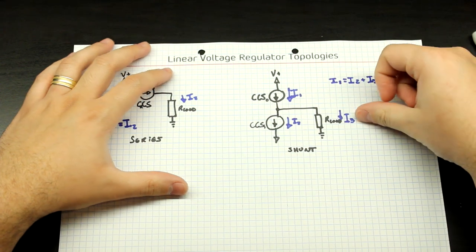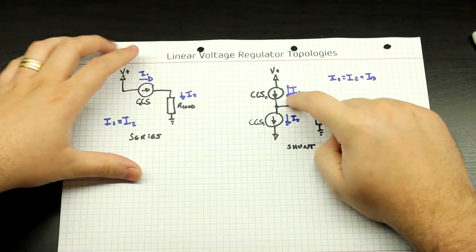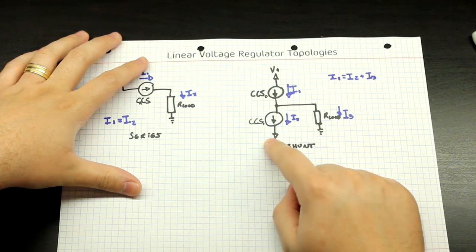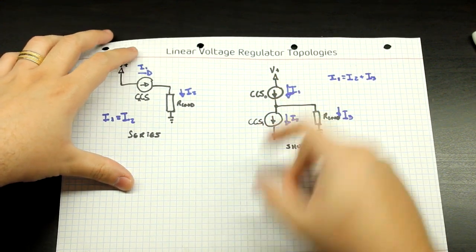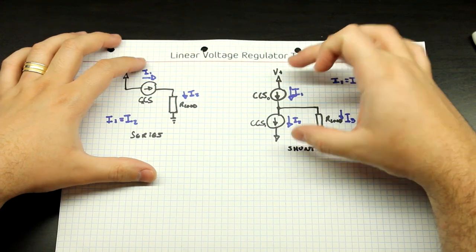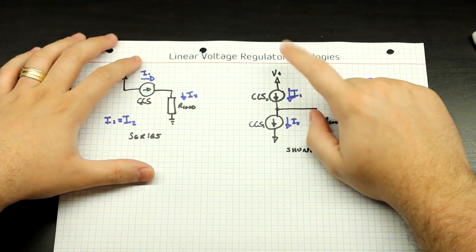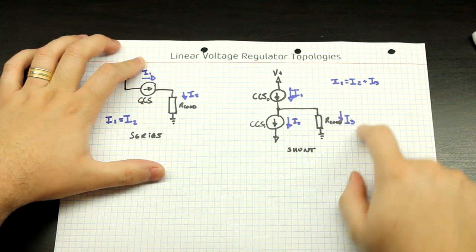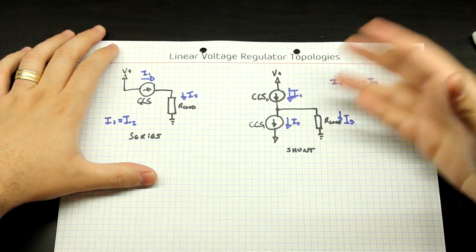How does it maintain regulation? It's very simple. If your current source is set to 1 amp and you want 100 milliamps to flow through your load, this current sink needs to sink the other 900 milliamps, so the sum of the two equals the sourced current. A shunt supply is always drawing the exact same amount of current regardless of load changes. It doesn't matter if you have a transformer or another linear supply on the V+ rail — you'll always be drawing the exact same current.